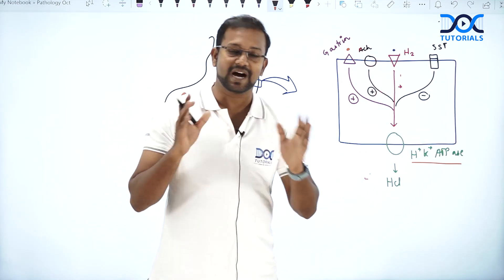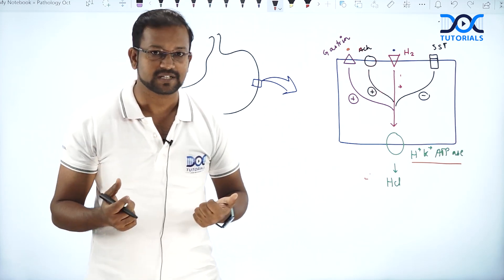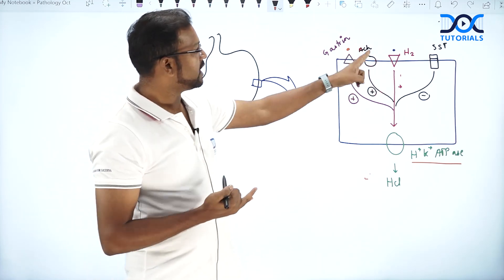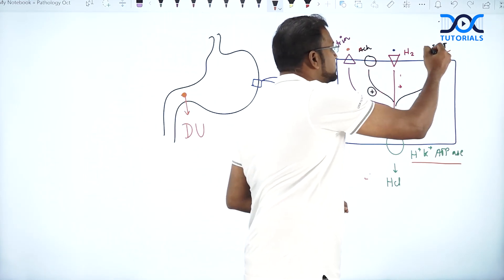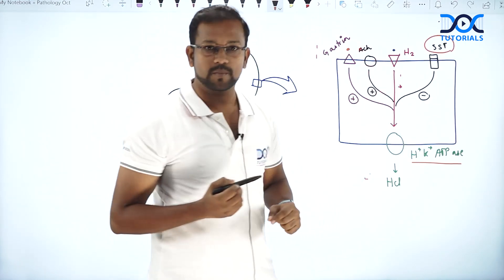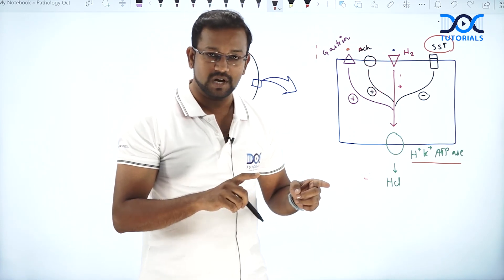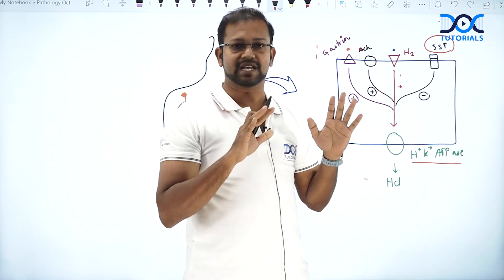What are the other factors which is stimulating the secretion of gastric acid? One, histamine. The next one, we have acetylcholine and we have gastrin. But apart from that, here we have written SST, that is somatostatin. Somatostatin has got the opposite response. It is going to decrease the secretion of the gastric acid.